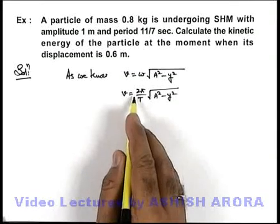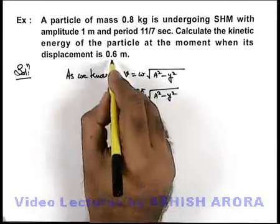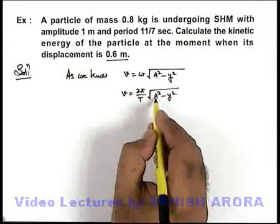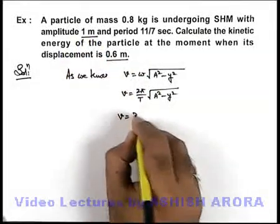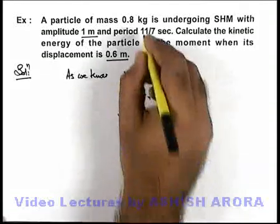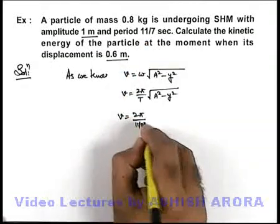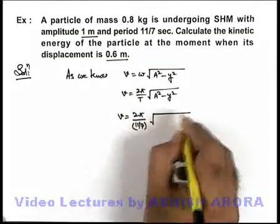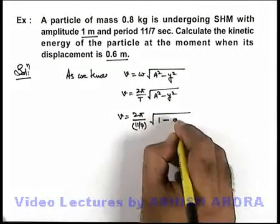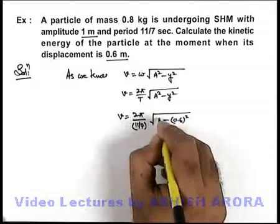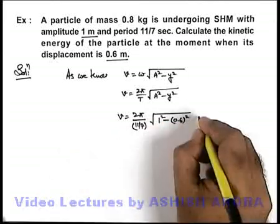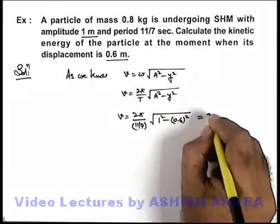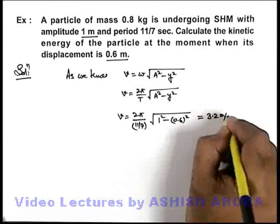We can directly calculate the speed of the particle at y = 0.6 m, and it is already given that amplitude is 1 m. Speed of the particle is (2π/(11/7))√(1² - 0.6²). If we simplify the expression on calculating, we'll get the speed to be 3.2 m/s.